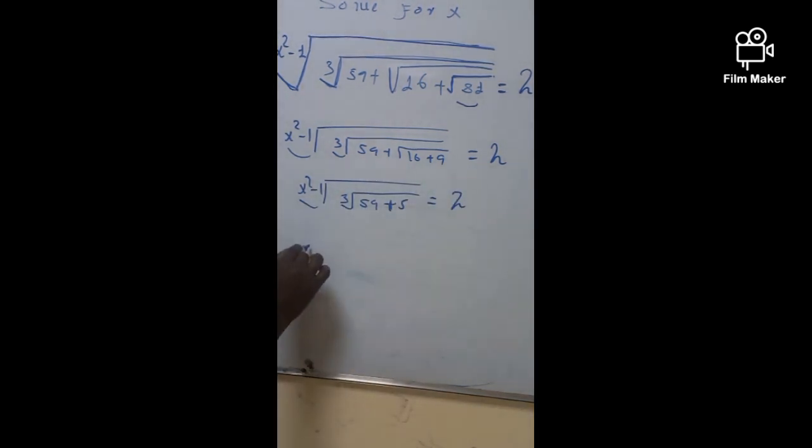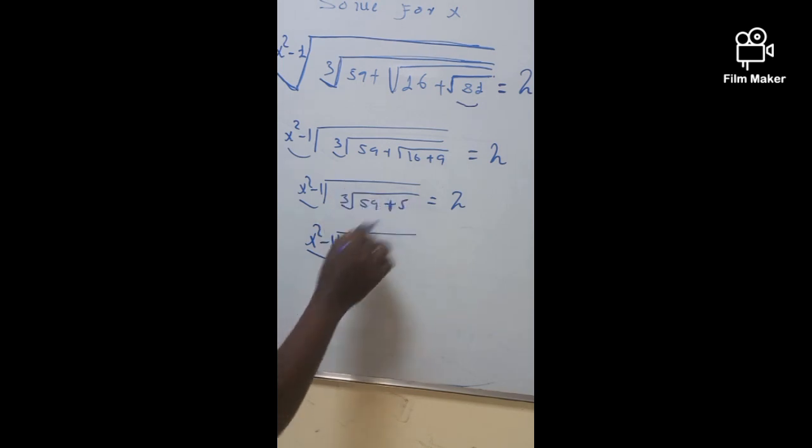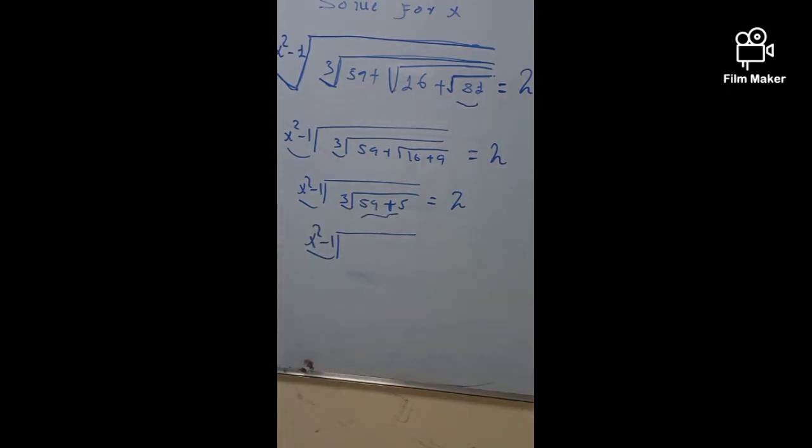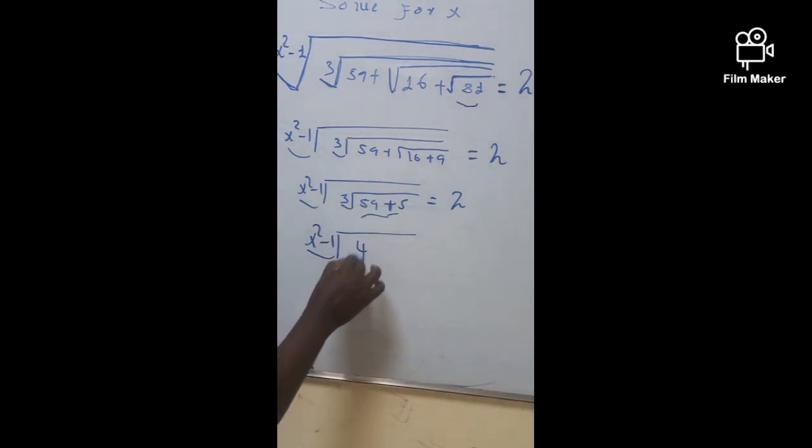Now finally, this is given by x square minus 1 root all. This is the cube root of 64. You know, 59 plus 5 is 64. So what's the cube root of 64? And perfectly, this is exactly given by 4. And it is going to be 2.